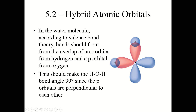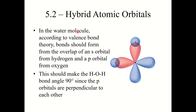Section 5.2: hybrid atomic orbitals. Here we're going to attempt to explain an issue that comes from the problem of reconciling valence bond theory with what we learned at the end of chapter 4, the VSEPR theory.